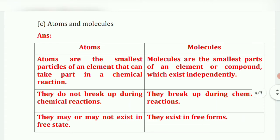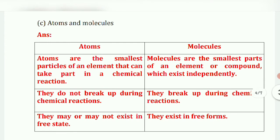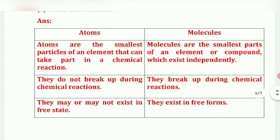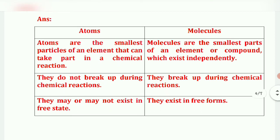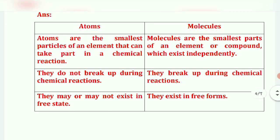Atoms versus molecules. Atoms are the smallest particles of an element that can take part in a chemical reaction. Molecules are the smallest part of an element or compound which exist independently. Atoms do not break up during a chemical reaction; molecules do break during a chemical reaction. Atoms may or may not exist in a free state; molecules exist in free form.